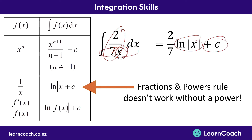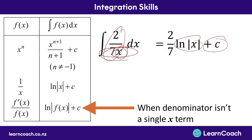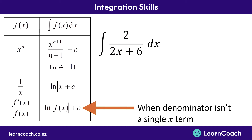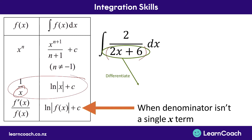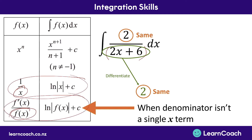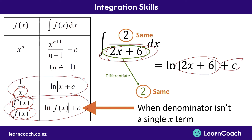But what happens when we don't have a nice single x term on the bottom of a fraction? That's when we use our final rule, when the denominator is not a single x term. There's no power on the bottom of the fraction, but it's not just a simple x term like in rule 2. So what we do is differentiate what's on the bottom of the fraction. We then check that this differentiation is the same as what's on the top. If it is, we can just write log of whatever's on the bottom of the fraction, plus c.